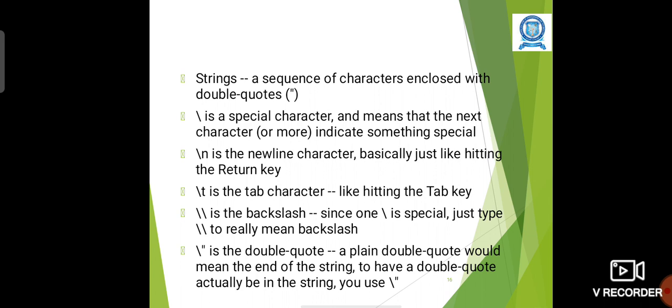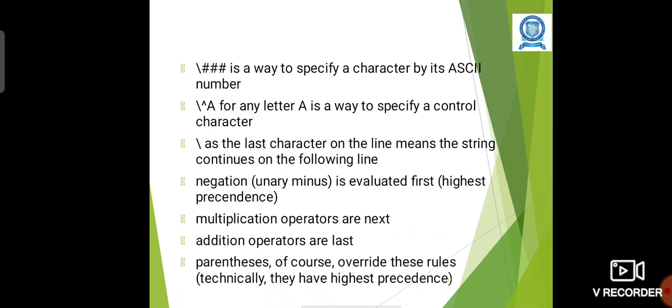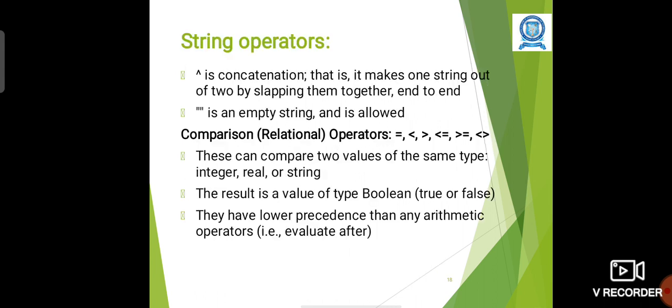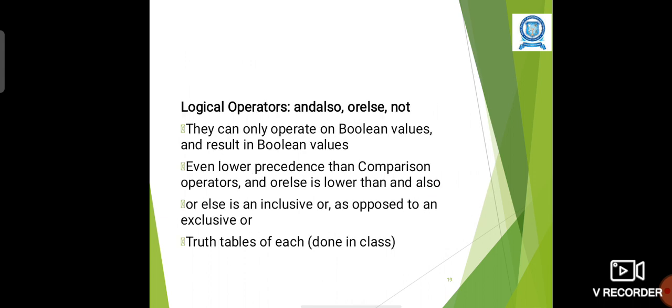Special characters include: \n newline character, \t tab character, \\ backslash, \" double quote, \### for hash symbols. Several operators are available. String operators: the caret symbol is used for concatenation. Double quotes represent the empty string. Comparison operators and logical operators are there. They are in word format: andalso, orelse, not.